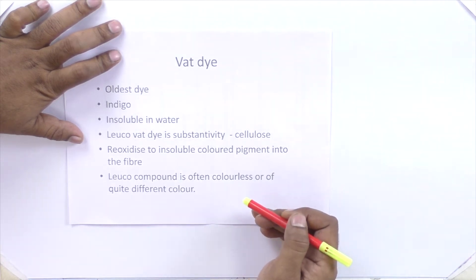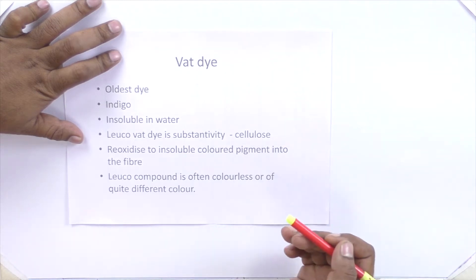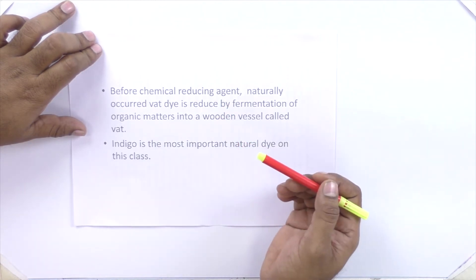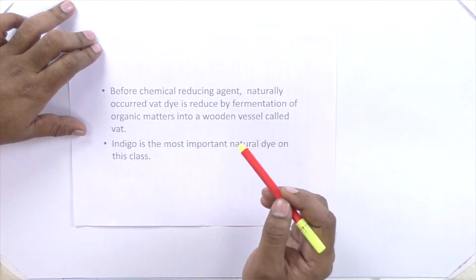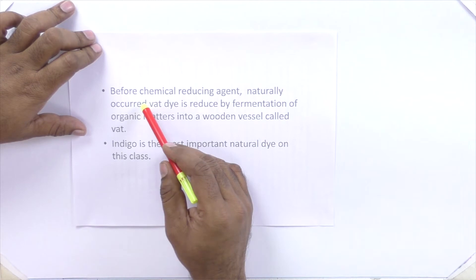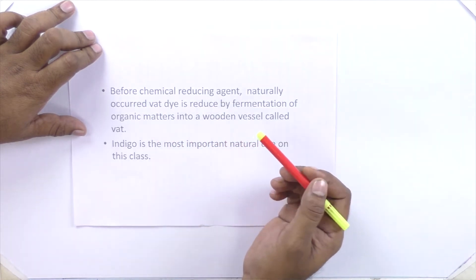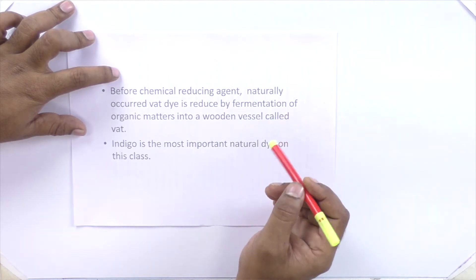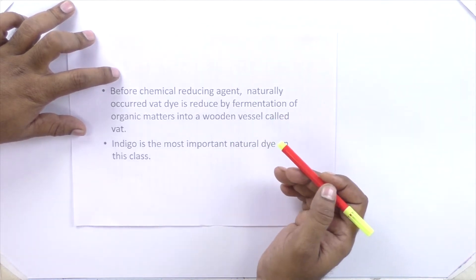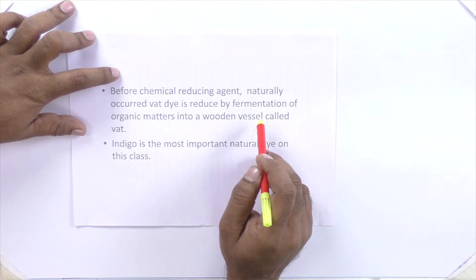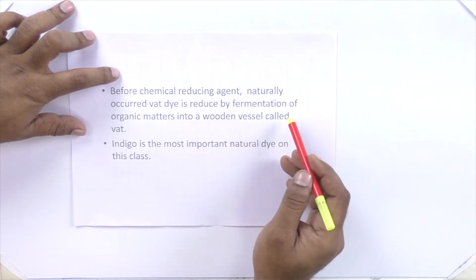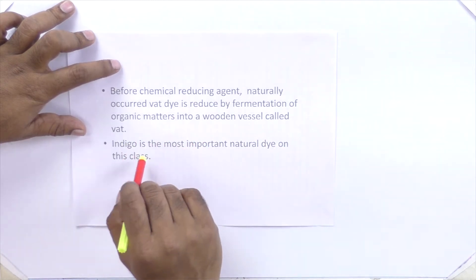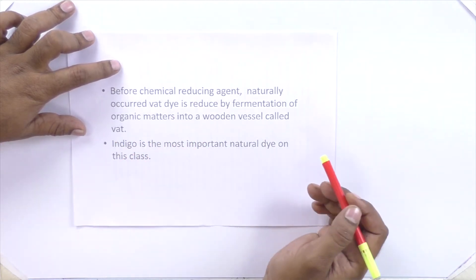Normally VAT dyes are natural dyes, though nowadays synthetic dyes are also available in the market. Before using a reducing agent to dissolve VAT dyes, they used a fermentation process and a wooden vessel to dissolve them. Because of that wooden vessel — which was called a VAT — the dye came to be called VAT dyes. Indigo is the most important class of VAT dyes.